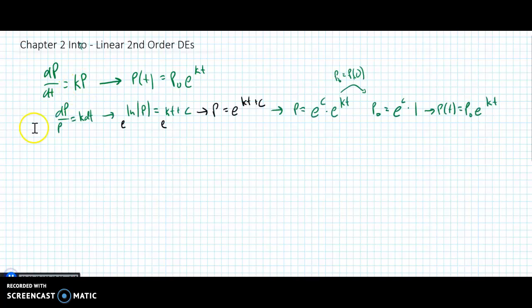Alright, here comes the solution. First step is to separate variables, divide by p, multiply by dt. Then we integrate, that's the green here. So you get ln absolute value of p is k times t plus a constant.